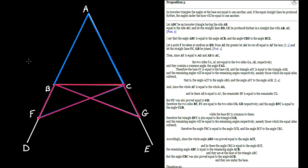Now we're sure those two red triangles are equal. We proceed to make inferences as we did for the blue triangles. The remaining angles equal the remaining angles: angle FBC equals angle GCB, and angle BCF equals angle CBG. Notice how they subtend sides which are proved to be equal.